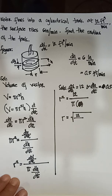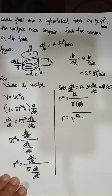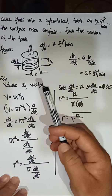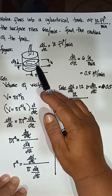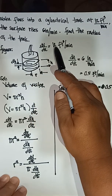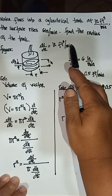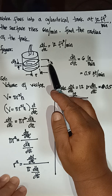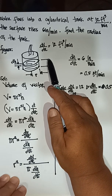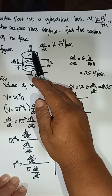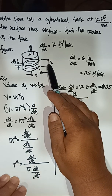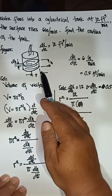Our next example: water flows into a cylindrical tank at 12 cubic feet per minute, the surface rises 6 inches per minute — find the radius of the tank. Looking at the cylindrical tank, water is flowing inside at a rate of 12 cubic feet per minute. The height of the water changes whenever there is an increase in the volume of water, while the radius of the tank is constant.